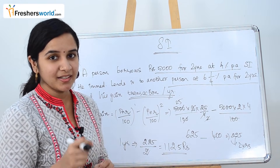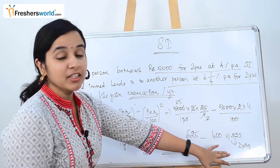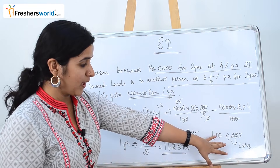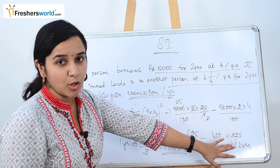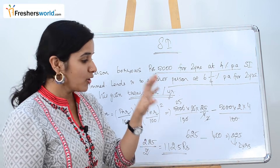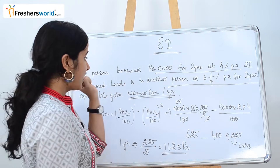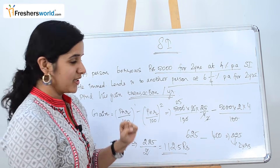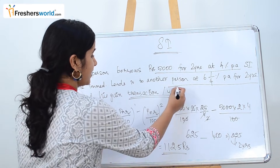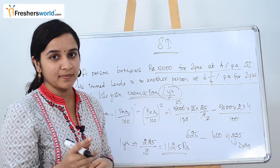A common mistake is that many people find the value of 225 rupees and stop there. There will likely be 225 as an option, but read the question again — it asks for the gain per year, so you must divide by the number of years to get the correct answer.